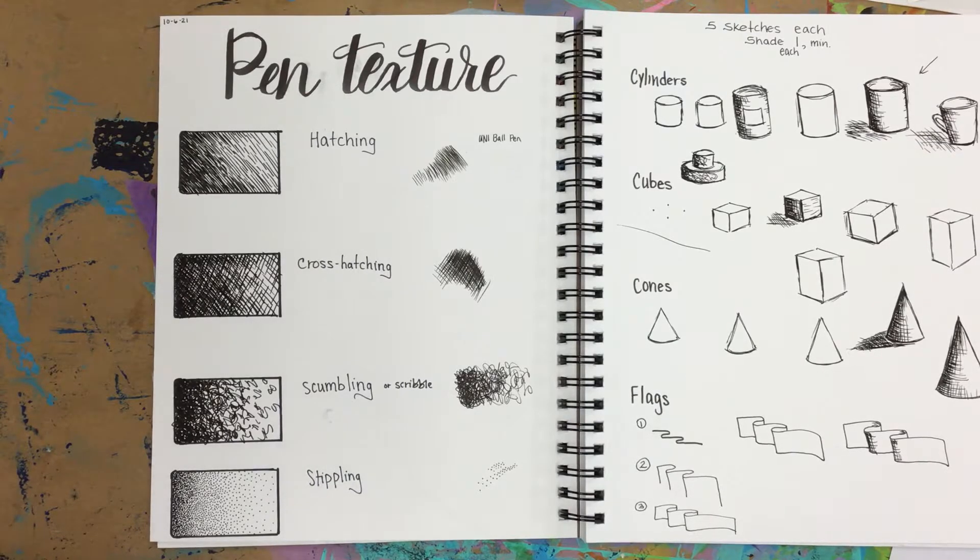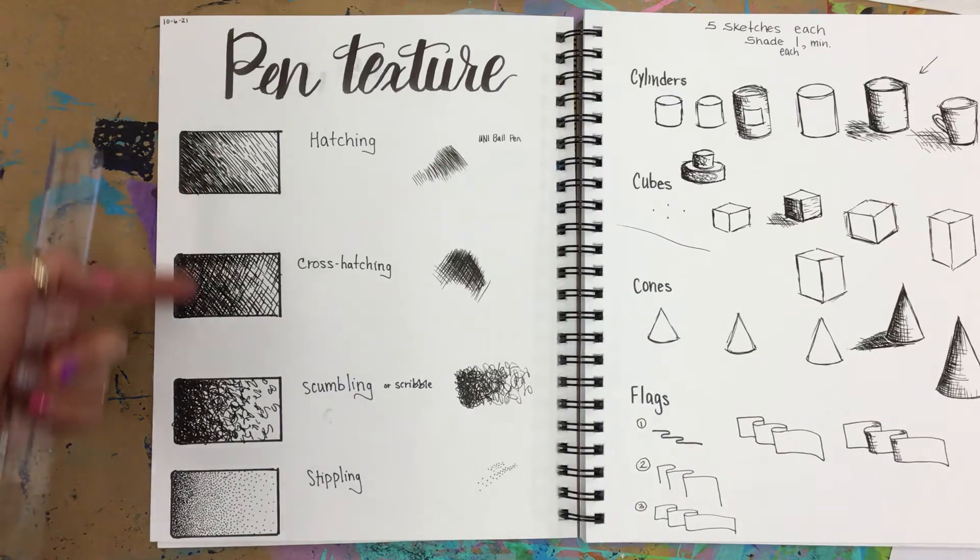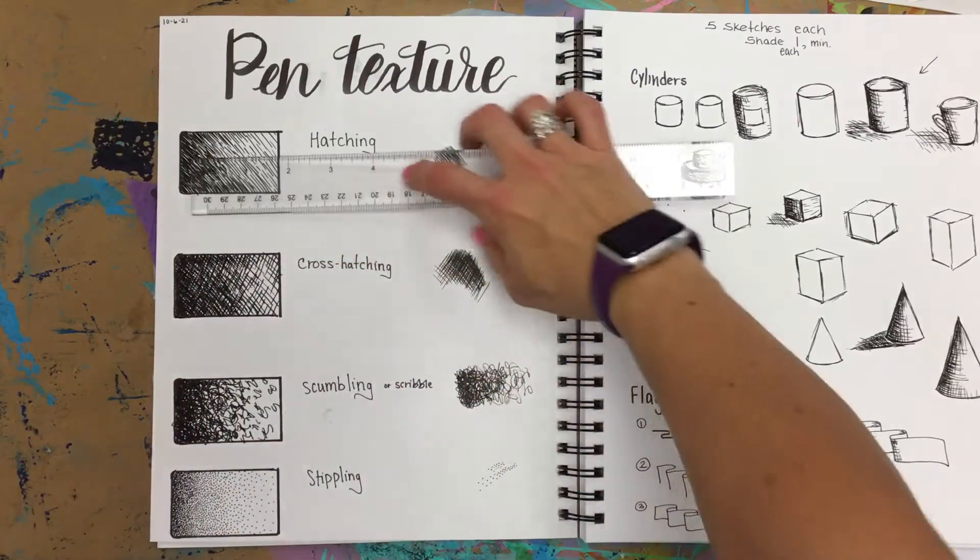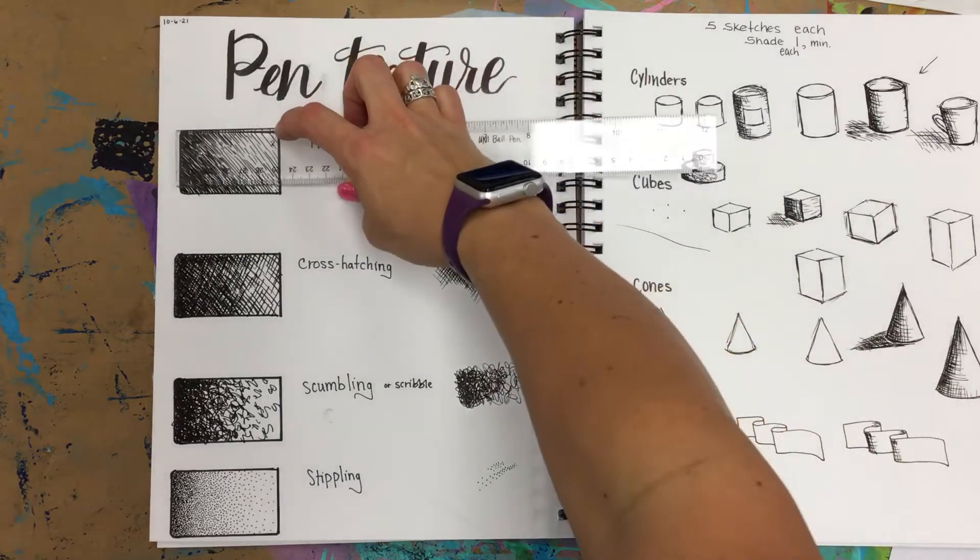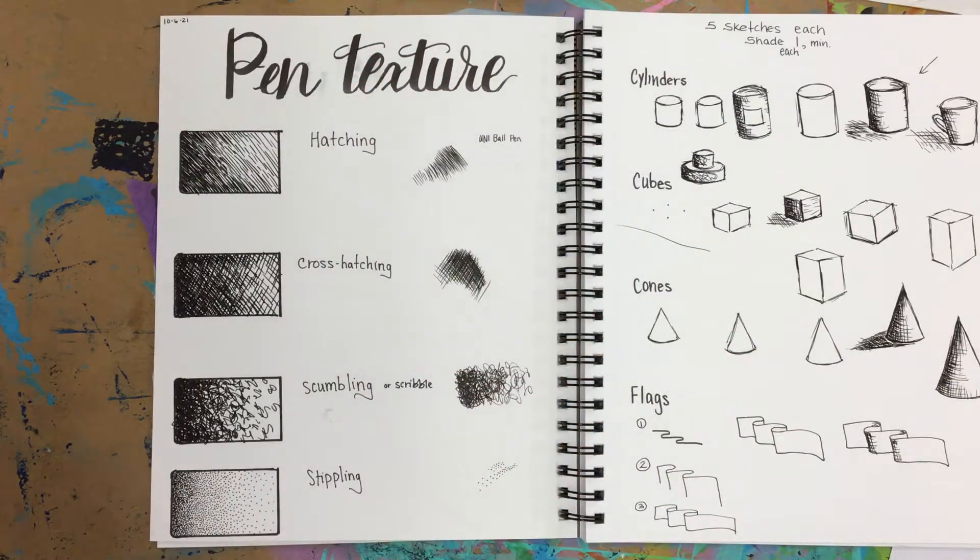In this unit we're experimenting with pen textures, showing shading using a pen. We did four different examples, all about two inches or so. I just used a ruler to trace each square, but what I want you to demonstrate is going from dark to light using that pattern.